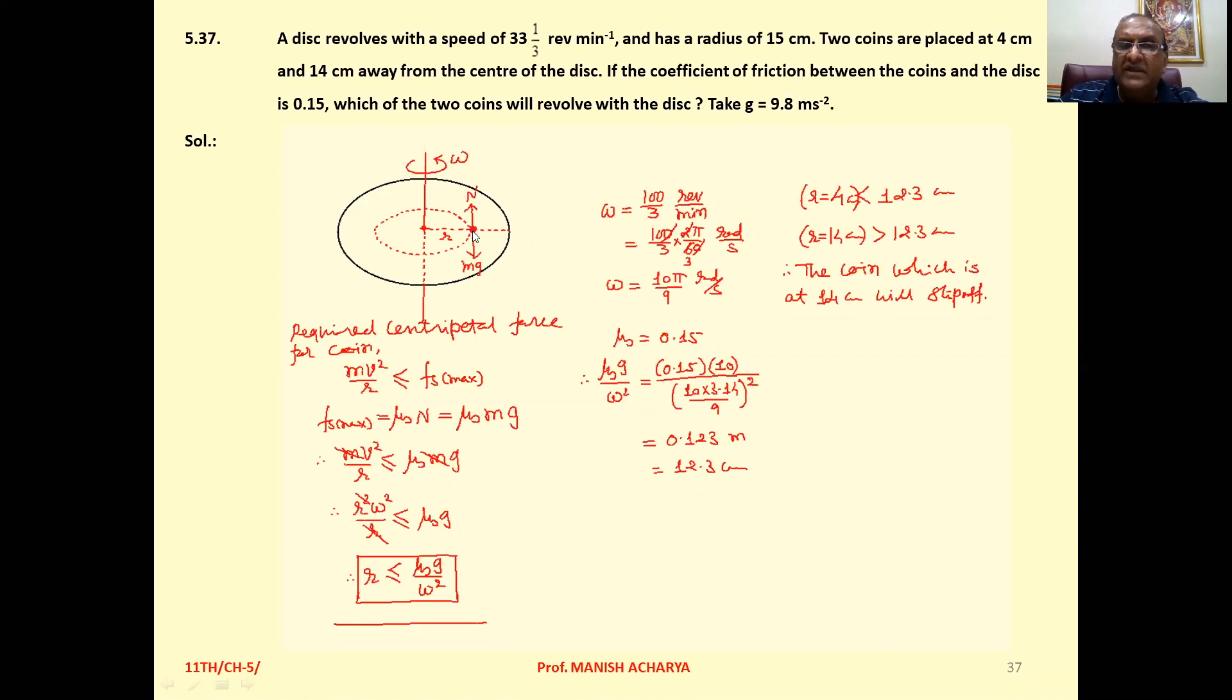Weight of the coin in downward direction mg. So the coin exerts the force mg in downward direction on the disk. So normal reaction of disk on the coin, that is N. Now to sustain the circular motion of the coin, required centripetal force, that is mv²/r. Who will provide this one? Obviously the friction.